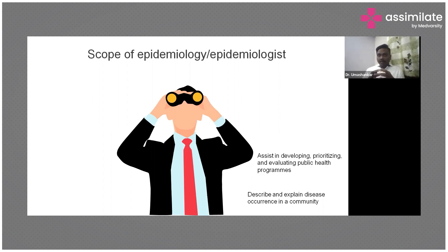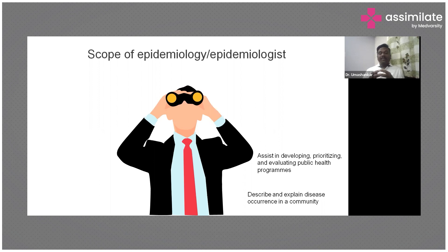While doing that, the government has to decide. For example, recently we saw COVID — the pandemic. All our resources had to go toward preventing and controlling COVID. Epidemiologists help in prioritizing and developing programs because we get evidence from our investigations. It is an evidence-based practice, evidence-based policy decisions. Epidemiologists assist in developing, prioritizing, and evaluating public health programs.